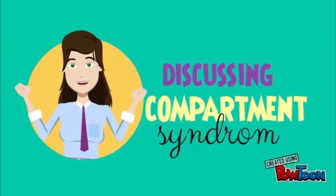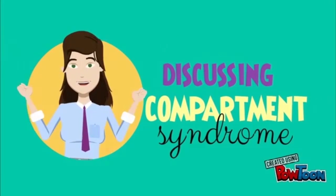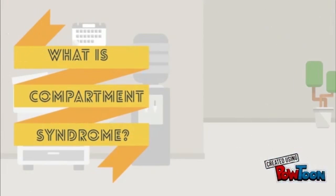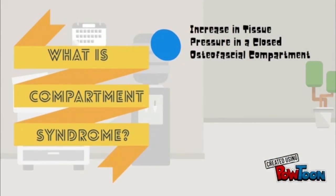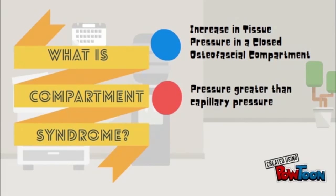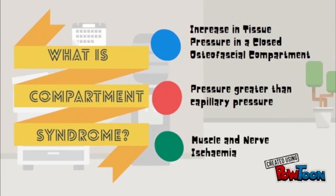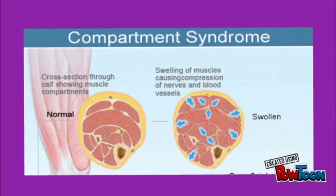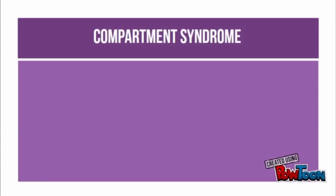Now let's discuss compartment syndrome. Compartment syndrome is defined as a rising tissue pressure within a closed osteofascial compartment, which exceeds perfusion pressure and results in nerve and muscle ischemia. Compartment syndrome most commonly occurs in injuries along the tibia, forearm, and hand.